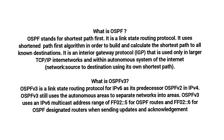OSPF v3 is a link state routing protocol for IPv6, as its predecessor OSPF v2 is for IPv4. OSPF v3 still uses autonomous areas to separate networks into areas. OSPF v3 uses an IPv6 multicast address range of FF02::5 for OSPF routers and FF02::6 for OSPF designated routers when sending updates and acknowledgements.